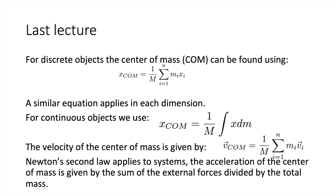First, a quick recap of the most important ideas from the last lecture. We were looking at how to calculate the centre of mass. For discrete objects, the x location of the centre of mass is 1 over the total mass times the sum of the mass of each component times its position. A similar equation applies in each dimension. For continuous objects, we break the object into small increments each with mass dm, and find the centre of mass using 1 over m times the integral of x dm.